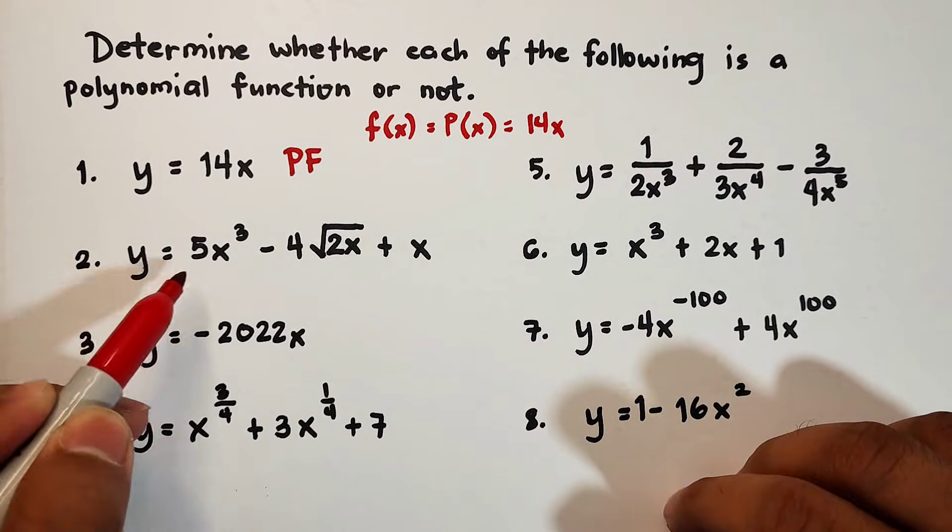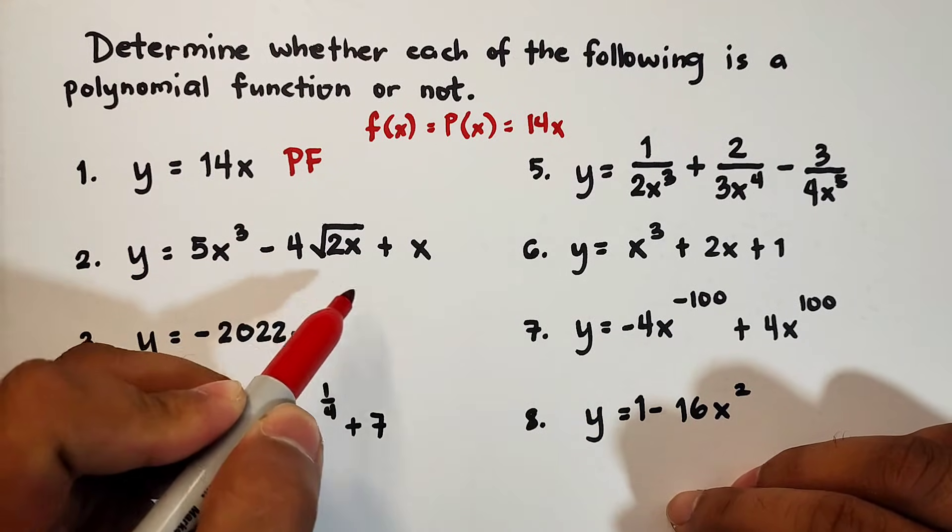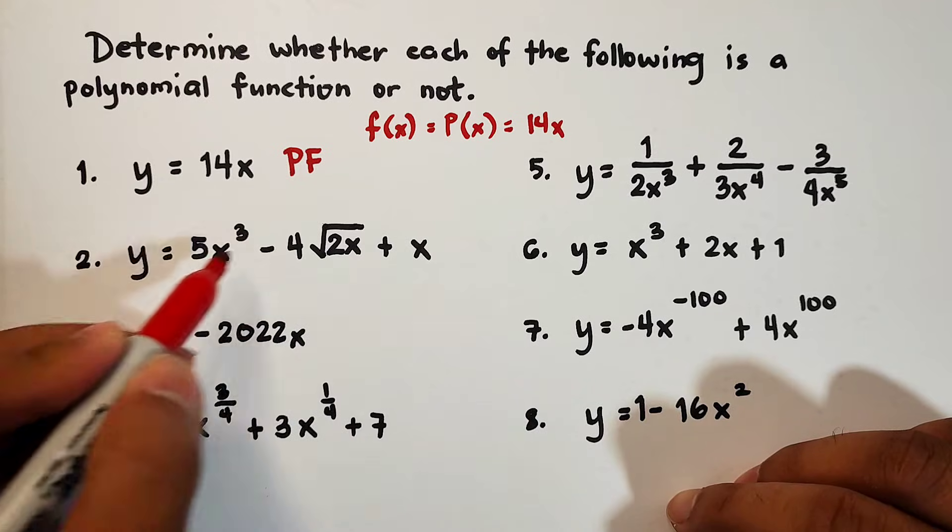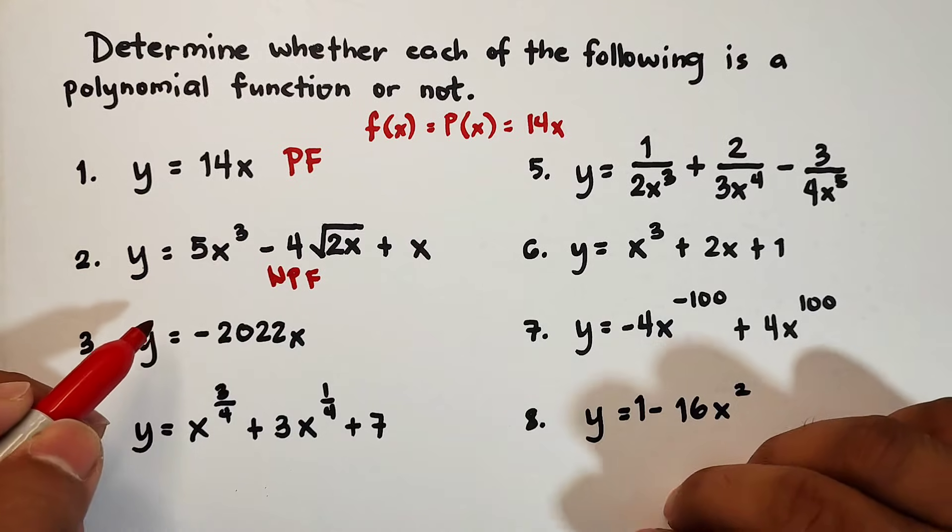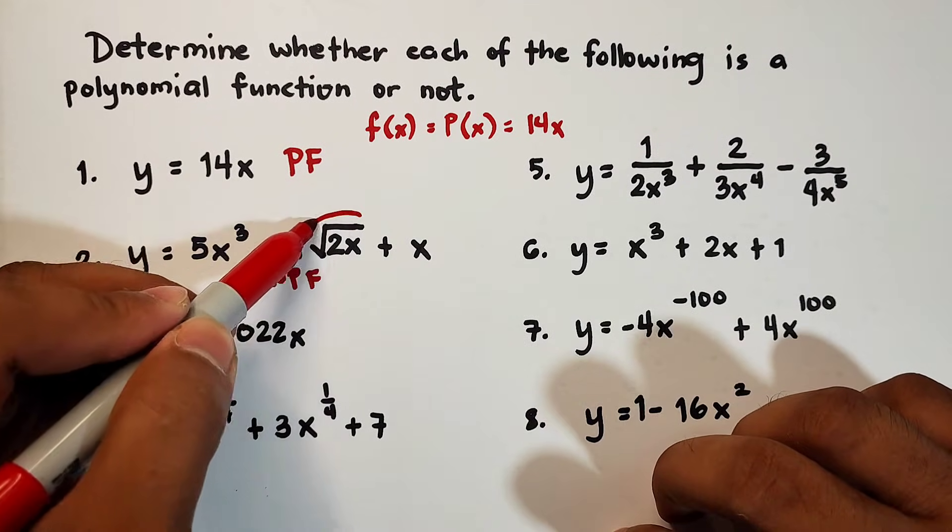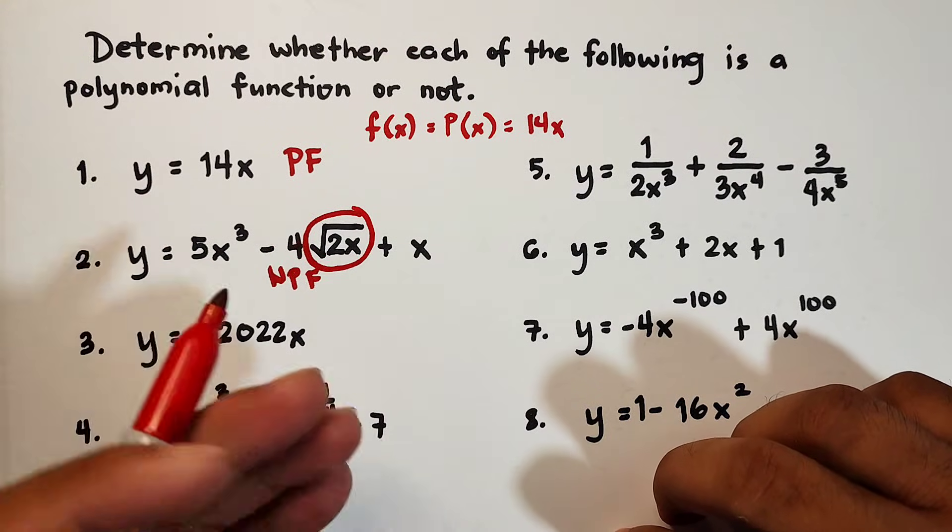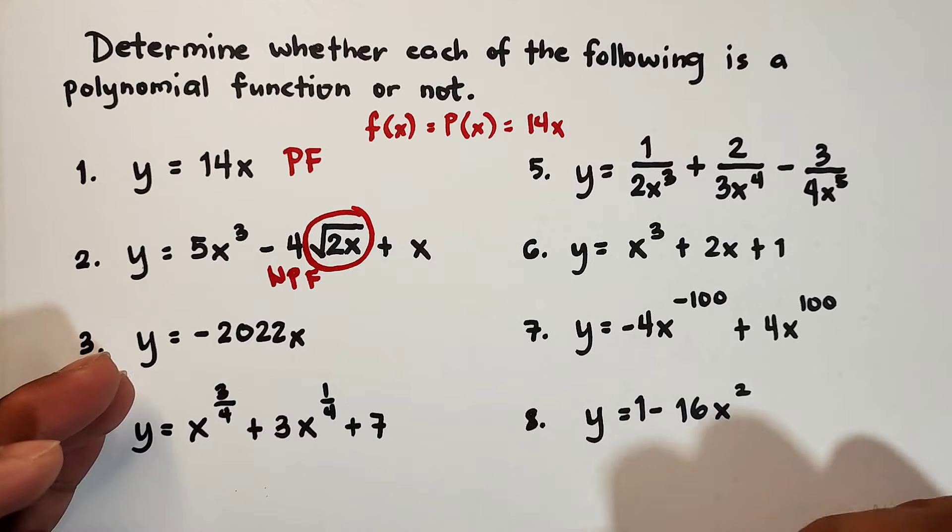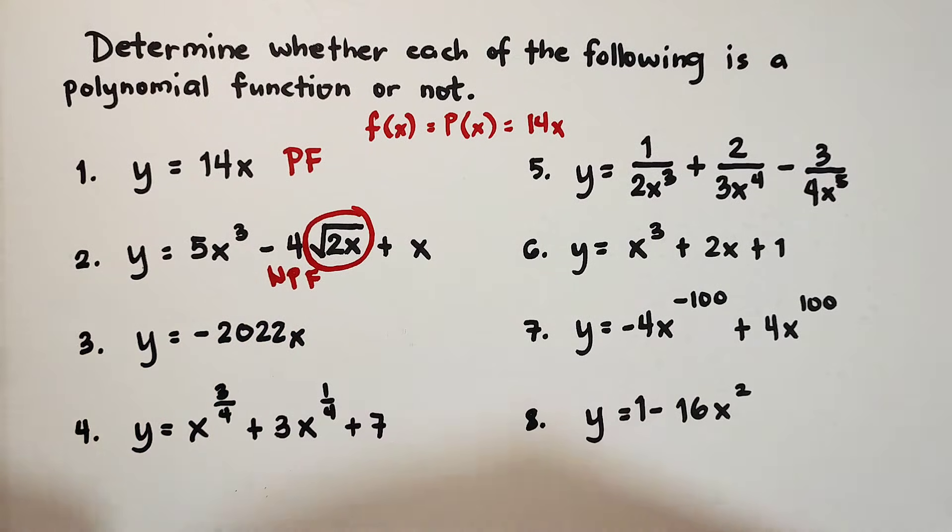We have here y is equal to 5x cubed minus 4 square root of 2x plus x. Definitely, this example is not polynomial function. What is the basic reason? We cannot have a variable inside the radical sign. So this one is not a polynomial function. We need to avoid variable inside the radical sign.